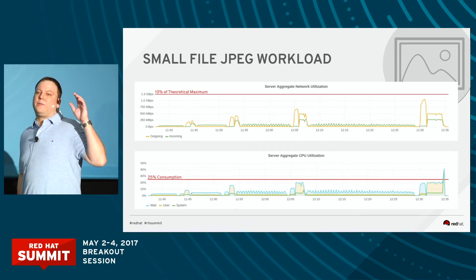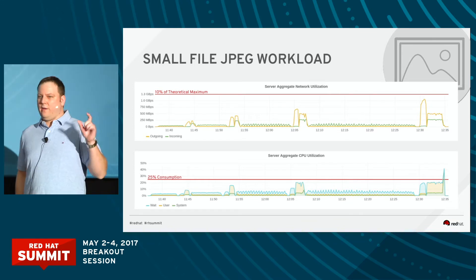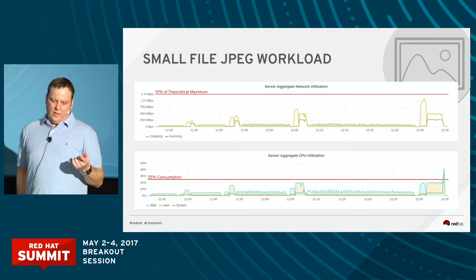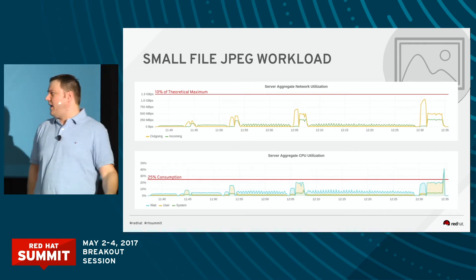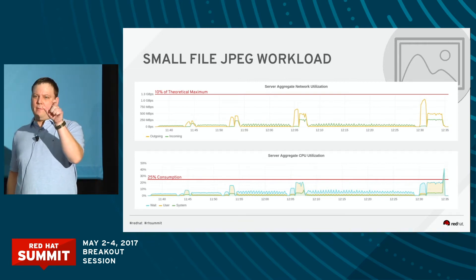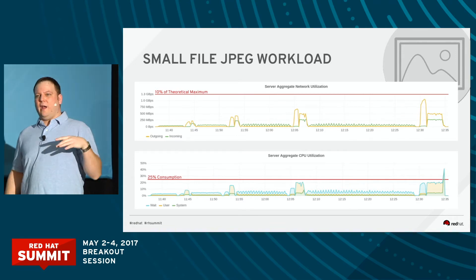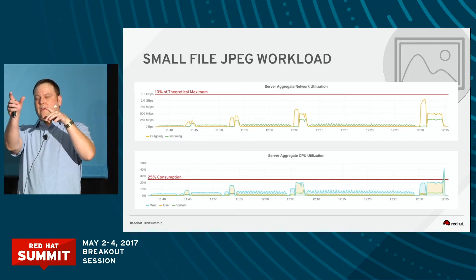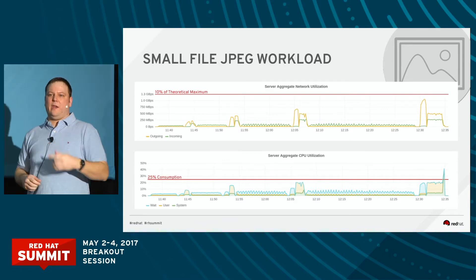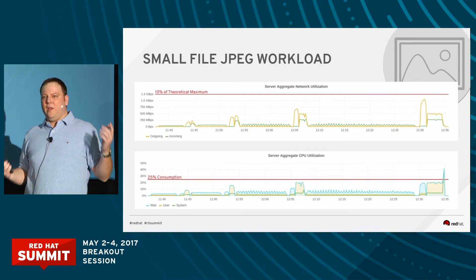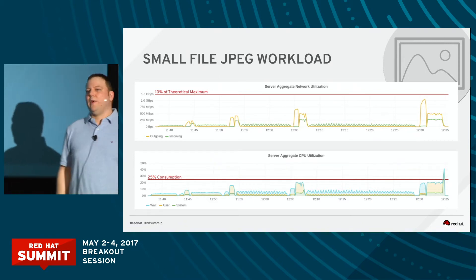Also, something else on write-back cache — it's really important to set at the controller level. Make sure that you have a battery, and I usually see 10 to 20 percent gains. So if my battery dies and I'm running automated performance regression tests, I see boom — 20 percent performance hit. So the battery died and it turned off write-back cache. You can really see the performance hit, and it's something you'll want to keep an eye on.